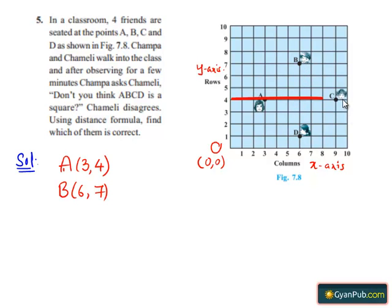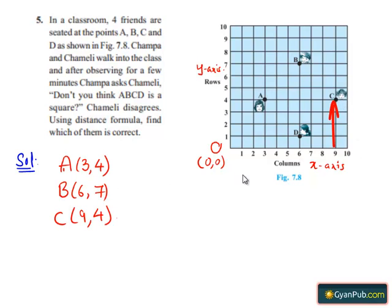Similarly, point C is located at a distance of 9 units from the y-axis, so the x-coordinate of point C will be 9, and point C is located at a distance of 4 units from the x-axis, so the y-coordinate of point C will be 4. Similarly, point D is located at a distance of 6 units from the y-axis, so the x-coordinate of point D will be 6, and point D is located at a distance of 1 unit from the x-axis, so the y-coordinate of point D will be 1.